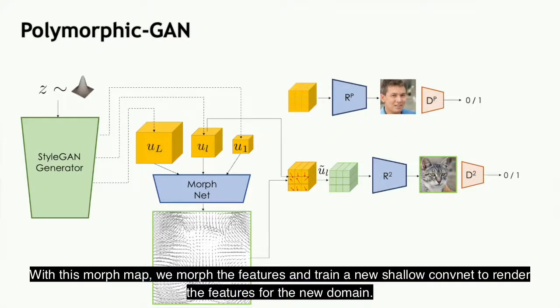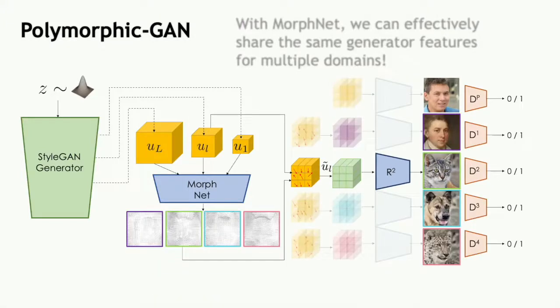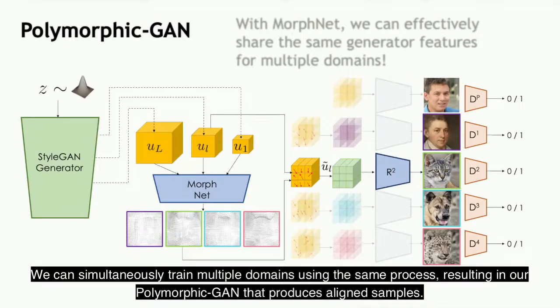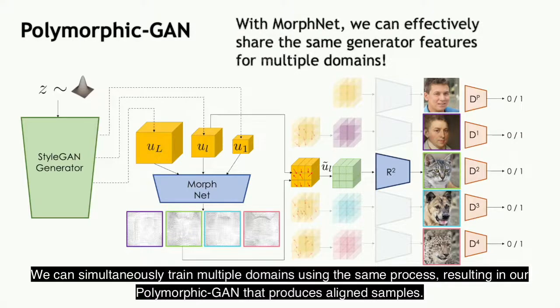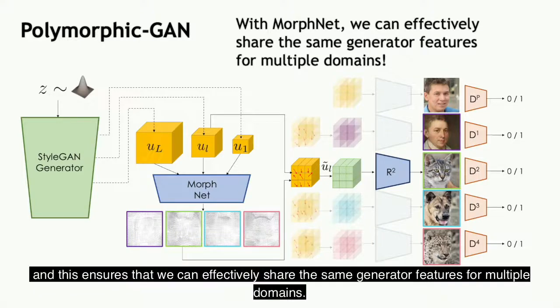With this MorphMap, we morph the features and train a new shallow ConvNet to render the features for the new domain, and the output is fed into a new discriminator. We can simultaneously train multiple domains using the same process, resulting in our Polymorphic GAN that produces aligned samples. Therefore, Polymorphic GAN learns the geometric differences through the MorphNet, and this ensures that we can effectively share the same generator features for multiple domains.